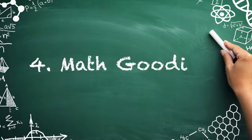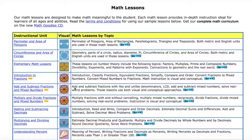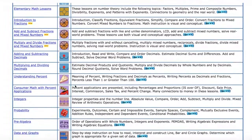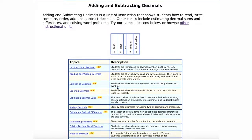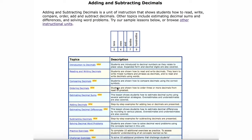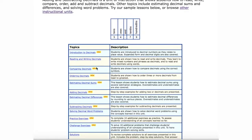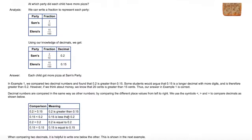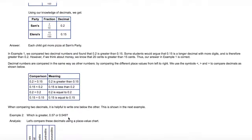Number four: math goodies. Try math goodies for engaging and interactive lessons online. The free website appeals to diverse learners by featuring puzzles, articles, and word problems. Playing to the site's content, students can, for instance, read an example-filled walkthrough about how to order decimals. Then they can test their skills by completing exercises and challenges.